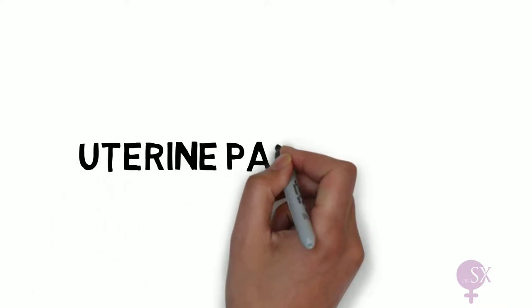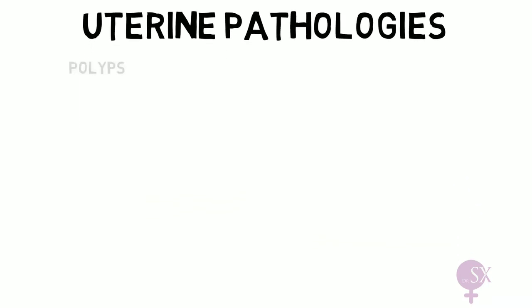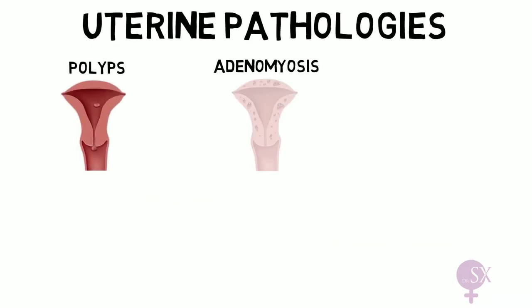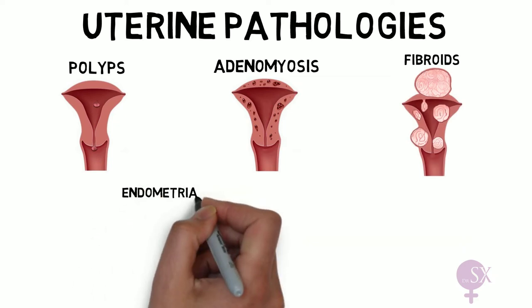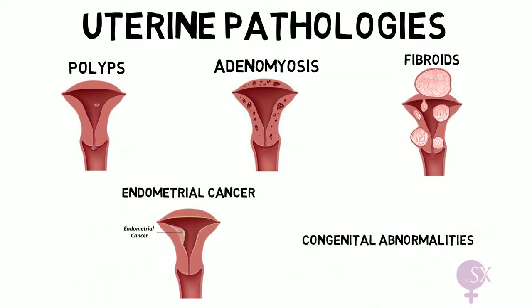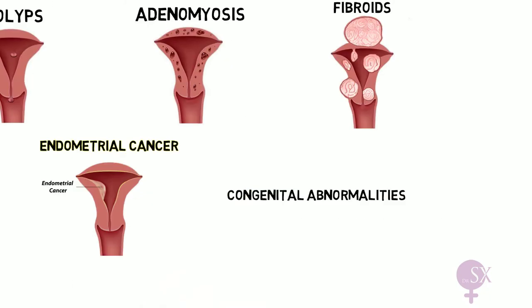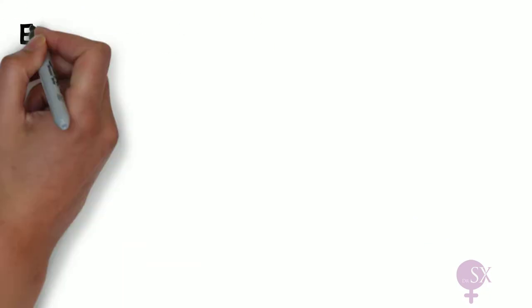In this video, I shall be continuing the discussion on uterine pathologies. Last time we spoke about polyps, adenomyosis, and fibroids. In this video, we shall be discussing endometrial cancer and congenital uterine abnormalities. Starting off with endometrial cancer first.